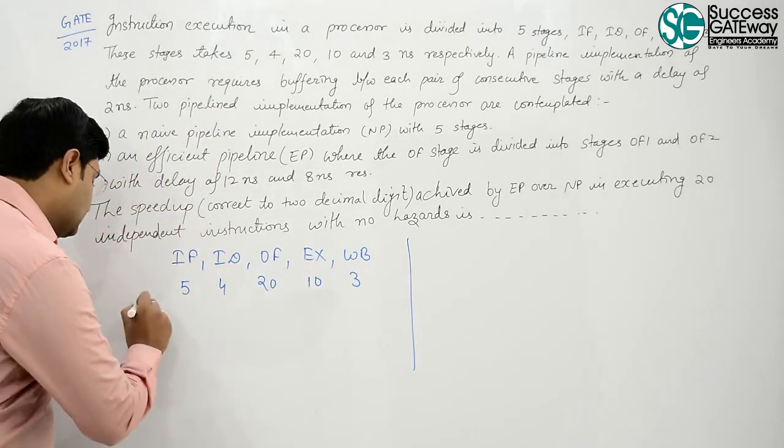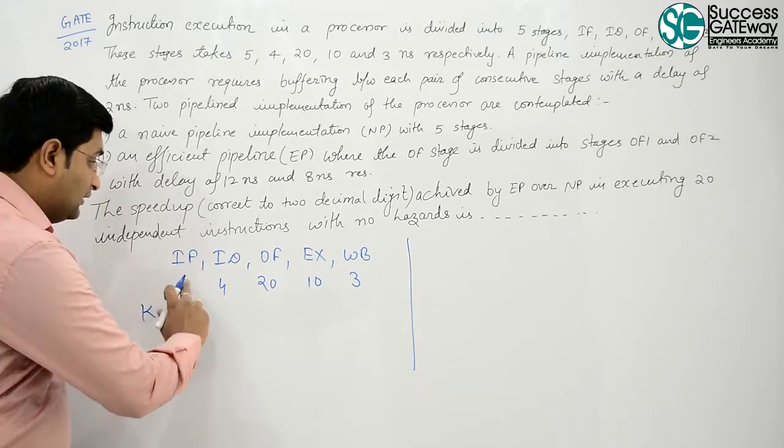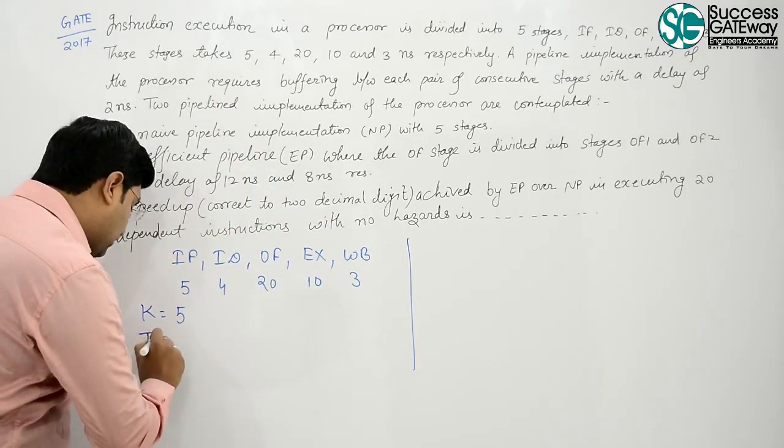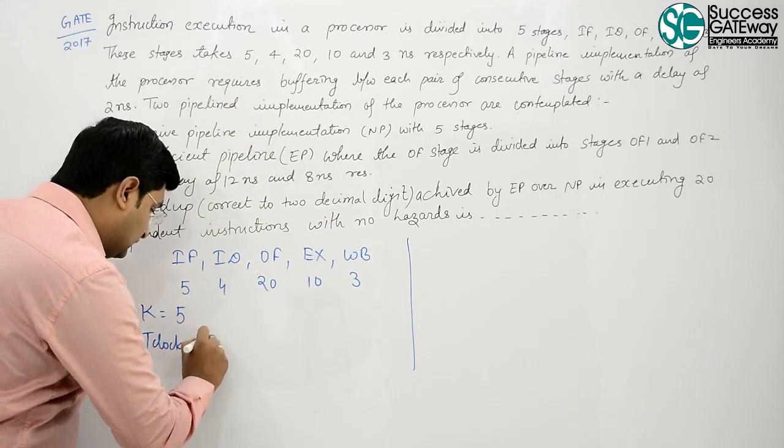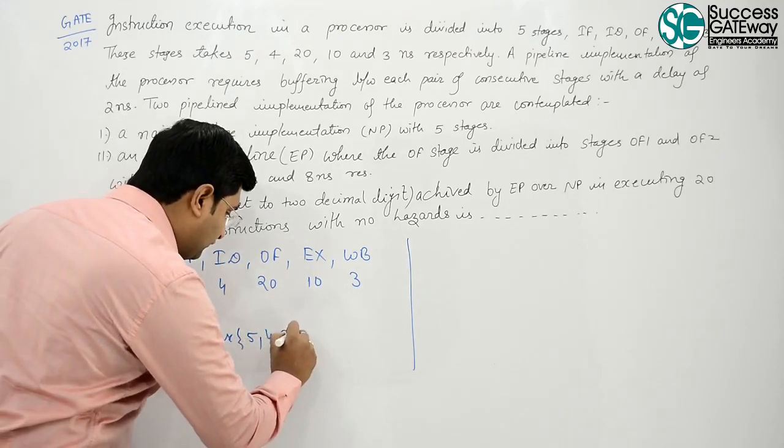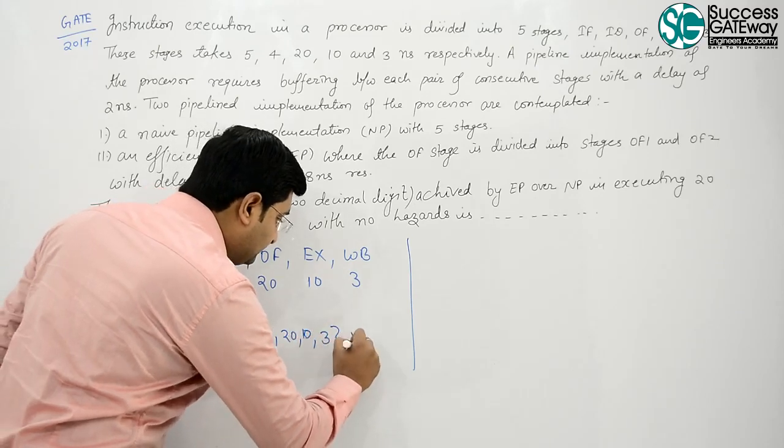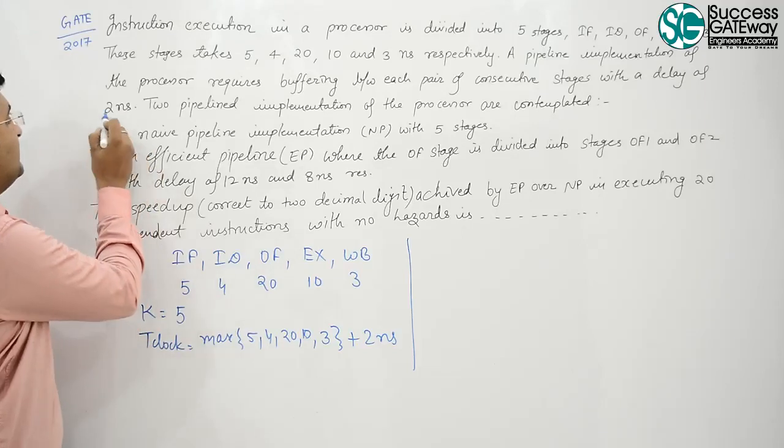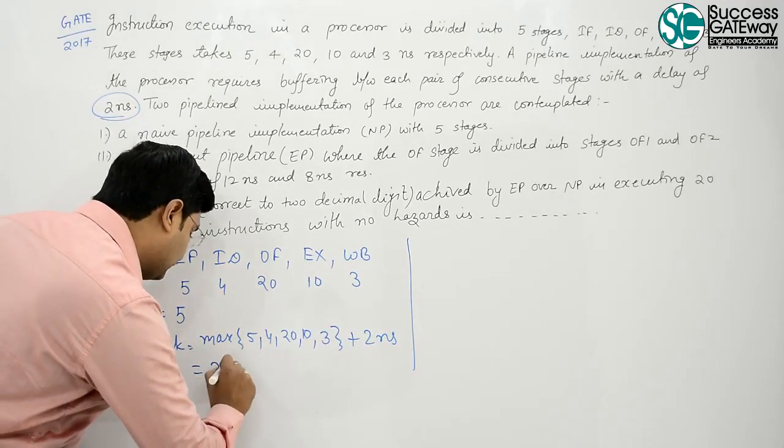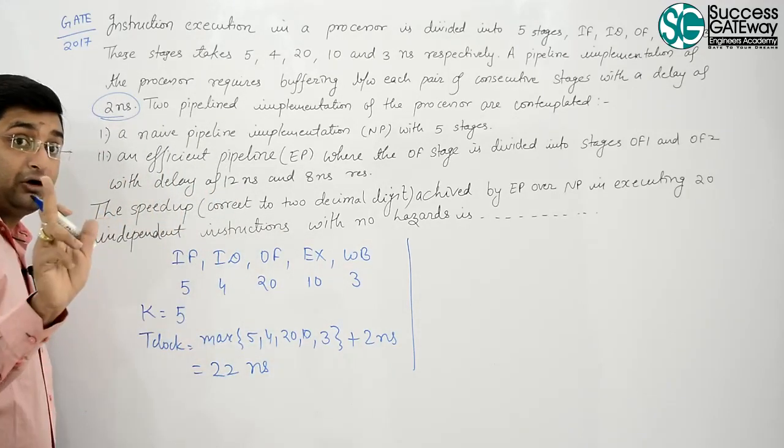Just a simple method. Now, what is your T clock? T clock is max of 5, 4, 20, 10, 3 plus overhead. Buffer overhead is given 2 nanoseconds. That is 22 nanoseconds for 1 clock.